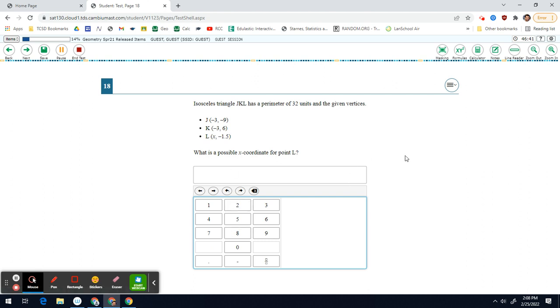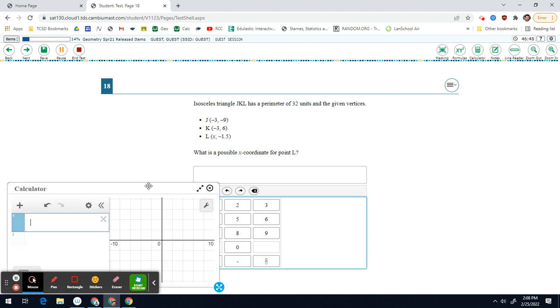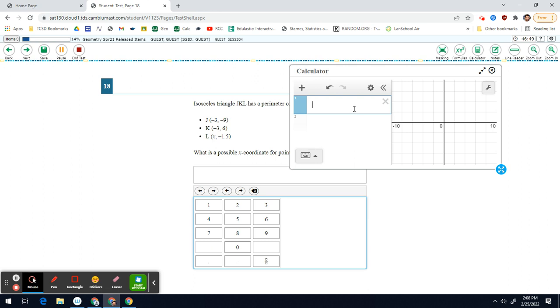I'm going to graph these two points that I know, J and K, using the graphing calculator. So I'm going to bring it up here. I know that J is at negative 3, negative 9, and I can label it as J here. Then K is negative 3, 6, and I can label it as K there.